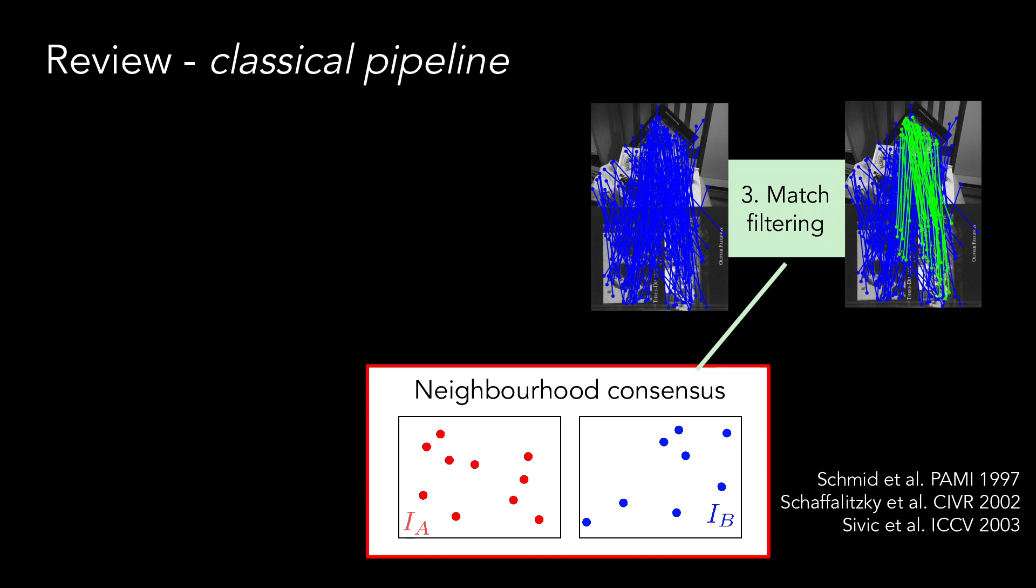Here, we illustrate the semi-local neighborhood consensus principle that operates in the following way. Given a correspondence from the previous step, we analyze the existence of supporting matches on its neighborhood. In this case, two other matches are coherent with it, so we deem it as correct. In this other case, no other coherent matches exist, so we deem it as incorrect.